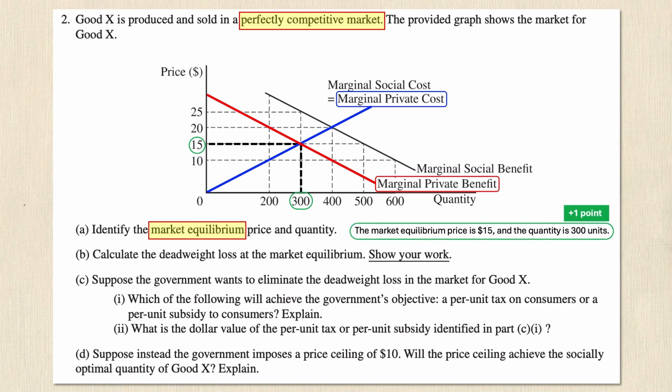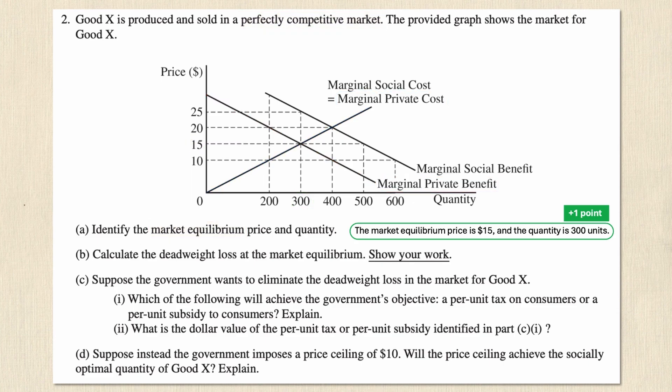Now part B says to calculate the deadweight loss at the market equilibrium and, more importantly, show your work. If there's a deadweight loss at the market equilibrium it means I'm not at the optimal value when I'm in equilibrium. So let's take a look at our equilibrium from question A where the marginal private benefit intersected with the marginal private cost.